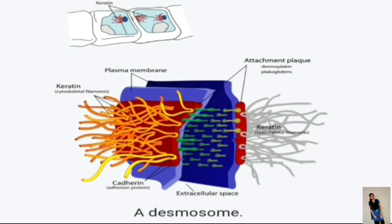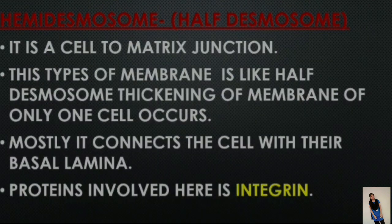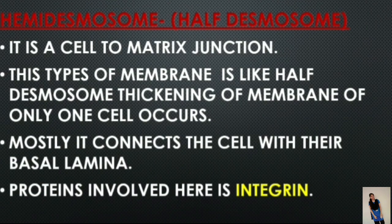Hemidesmosome is also known as half desmosome. It is a cell-to-matrix junction. This junction involves thickening of the membrane of only one cell. It mostly connects the cell with their basal lamina. The protein involved here is integrin protein.